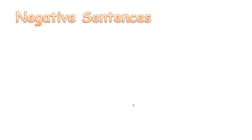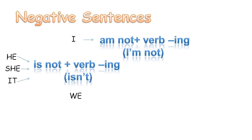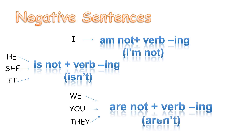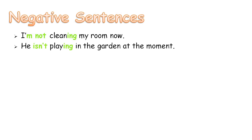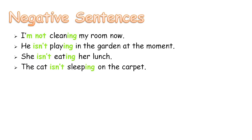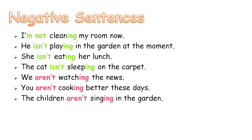And let's see how we can make negative sentences with the present continuous tense. We use 'am not + verb-ing' with I. We use 'is not / isn't + verb-ing' with he, she, and it. We use 'are not / aren't + verb-ing' with we, you, and they. Examples: I'm not cleaning my room now. He isn't playing in the garden at the moment. She isn't eating her lunch. The cat isn't sleeping on the carpet. We aren't watching the news. You aren't cooking better these days. The children aren't singing in the garden.